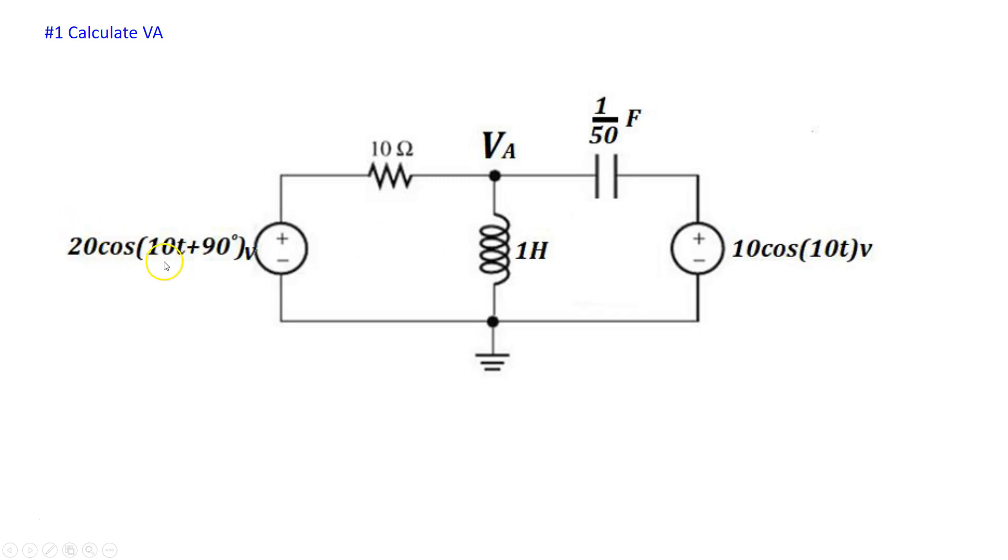So here, first thing we need to make sure is that both power supplies in this are running at the same frequency. We do see that they are and that particular frequency omega is equal to 10 radians per second.